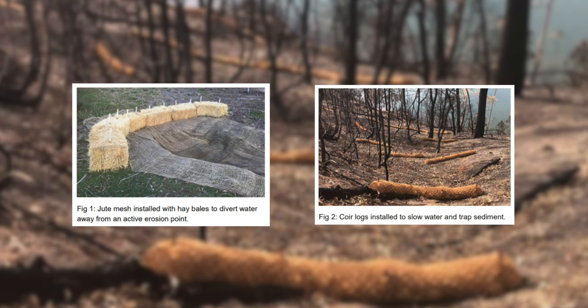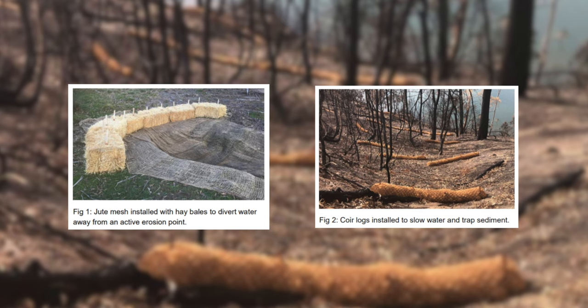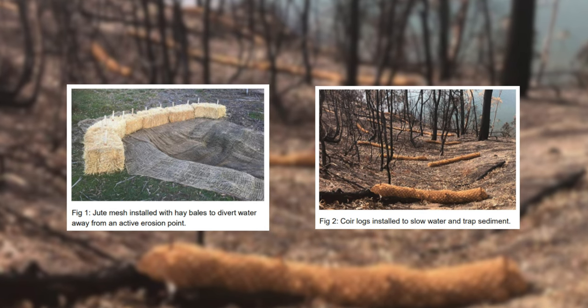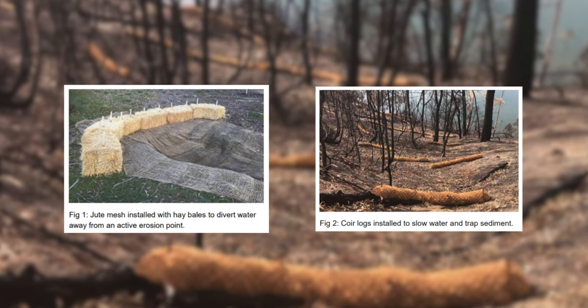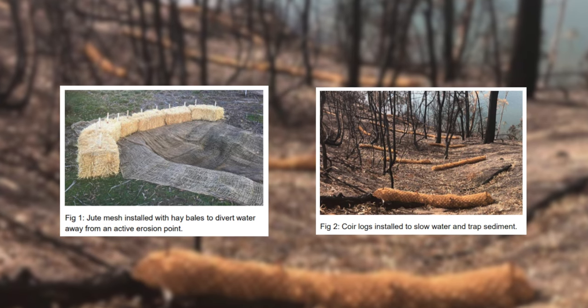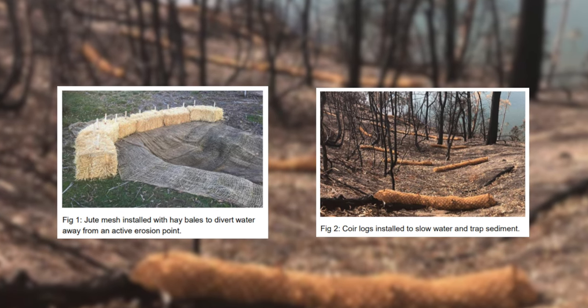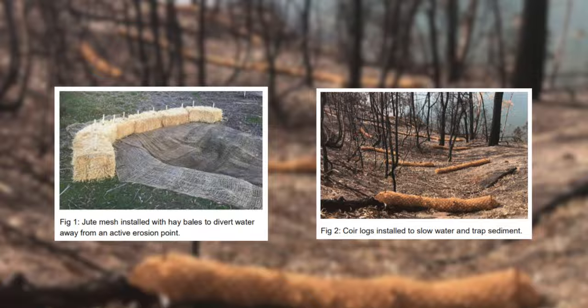To address gullying, you can divert or slow overland runoff with hay bales and star pickets, coil logs or sandbags. These simple techniques are effective for small scale gullying, but for larger scale gullying or bed erosion, hybrid solutions of hard engineering and revegetation will be required, so you should seek guidance from a river practitioner.